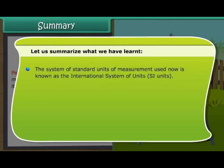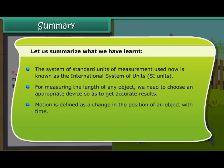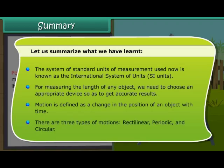The system of standard units of measurement used now is known as the International System of Units or SI Units. For measuring the length of any object, we need to choose an appropriate device so as to get accurate results. Motion is defined as a change in the position of an object with time. There are three types of motions: rectilinear, periodic, and circular.